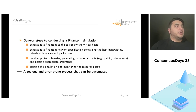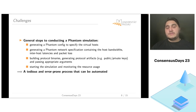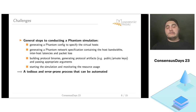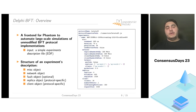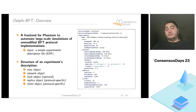Running Phantom simulations can be relatively tedious with many steps: generating a Phantom config to specify virtual hosts, generating the Phantom network specification — a network graph with host bandwidth, inter-host latencies, and packet loss — building protocol binaries, generating artifacts, passing arguments, starting the simulation, and monitoring resource usage. This left much room for automation, which is why we developed Delphi BFT — a frontend towards Phantom to automate large-scale simulations of unmodified BFT protocol implementations.